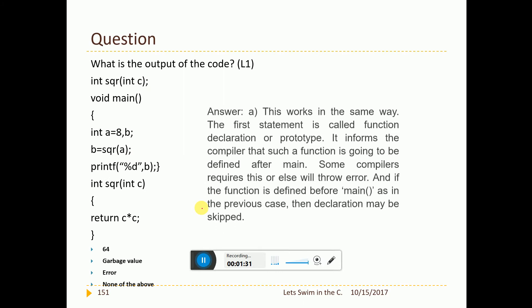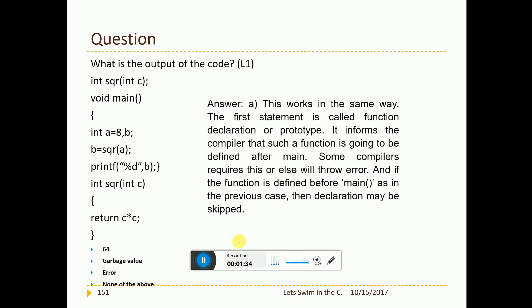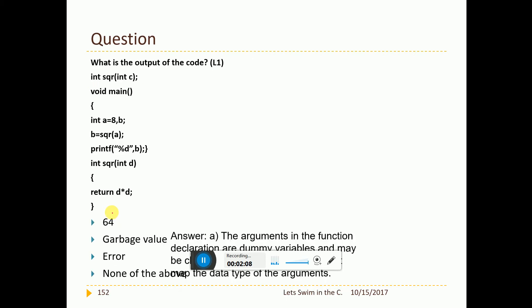Now this question again the same question, but see that there is one additional thing that has happened here. This is what is included here. This is called function prototype. This is not required in some of the modern compilers, but this is required in some of the old compilers like Turbo C. But is it a good practice to have it? Yes. Many people say that it is good practice. So better to have the function prototype. But the compilers will not force you with an error. Now here the same code is presented here just with this change. So the output will be 64.